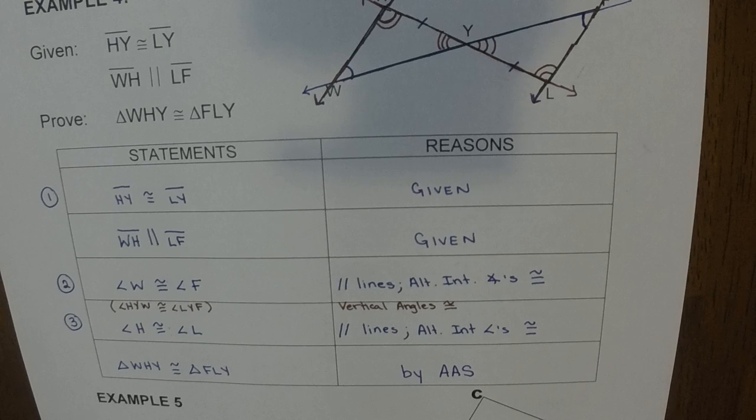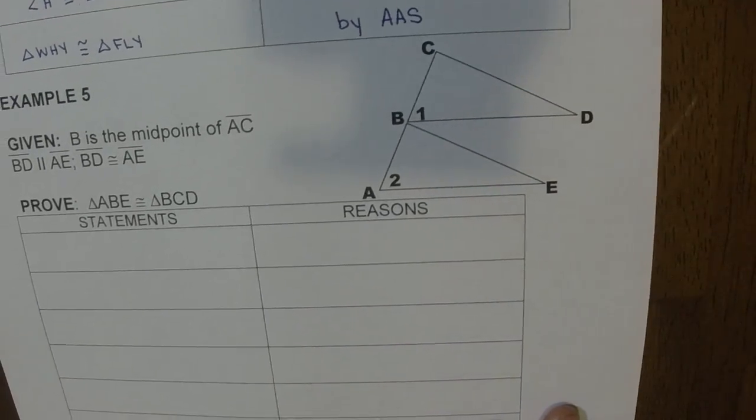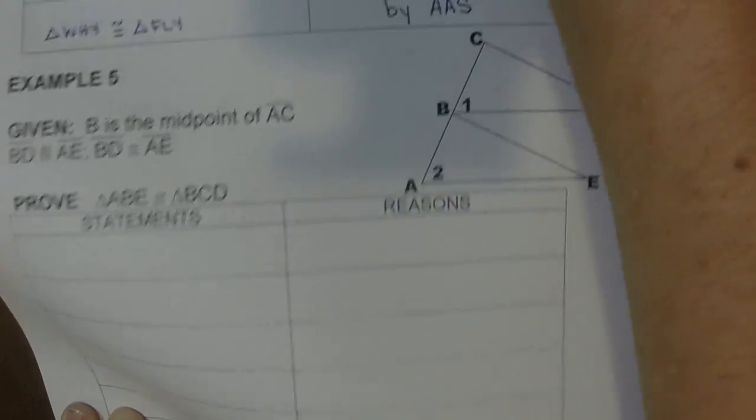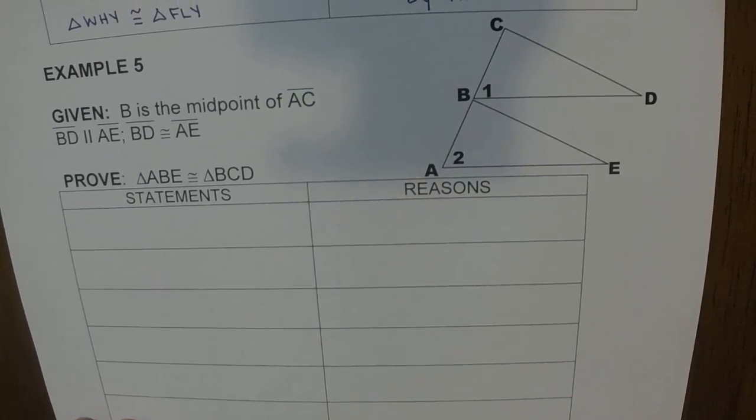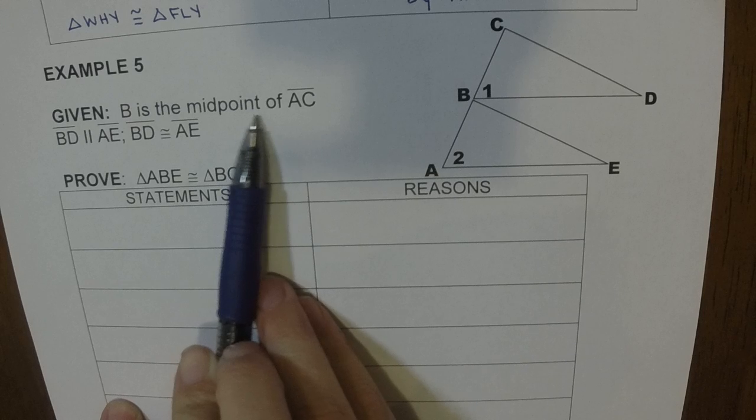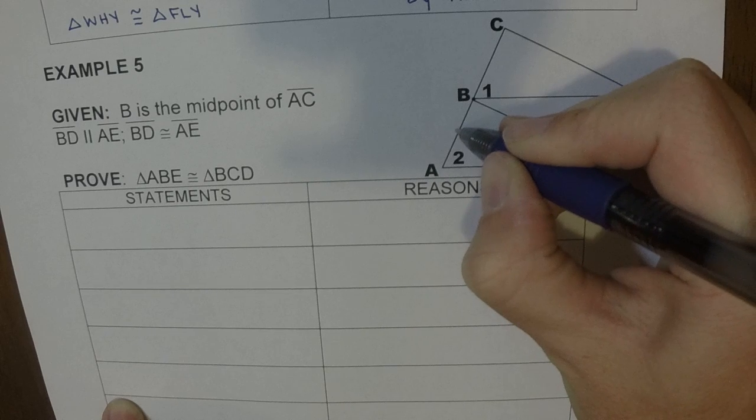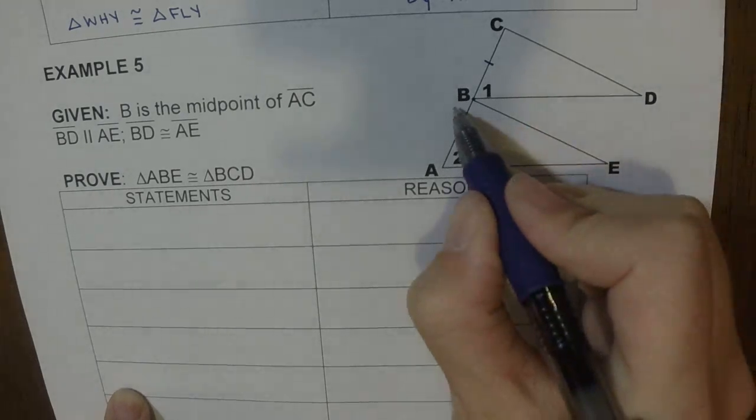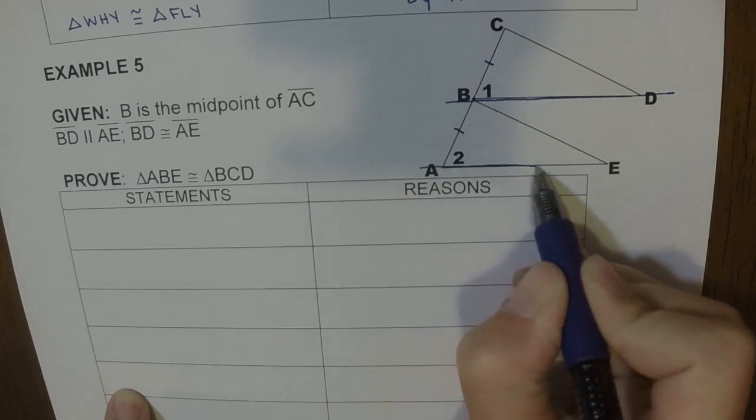Alright, so now let's look at example five. Okay, so marking the picture. B is the midpoint of AC. So this point is the midpoint of these two. So remember that tells us this is congruent to this. Then it says BD, so this right here, is parallel to AE, this right here.